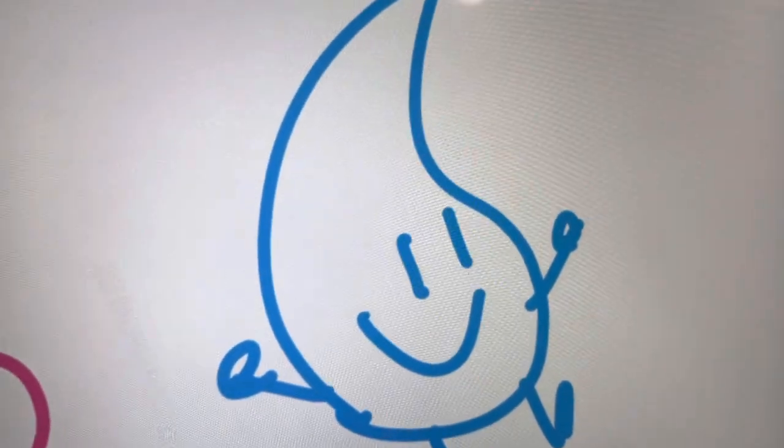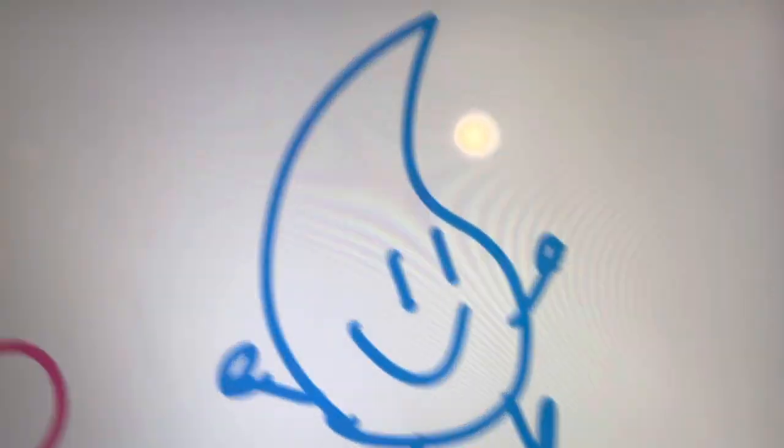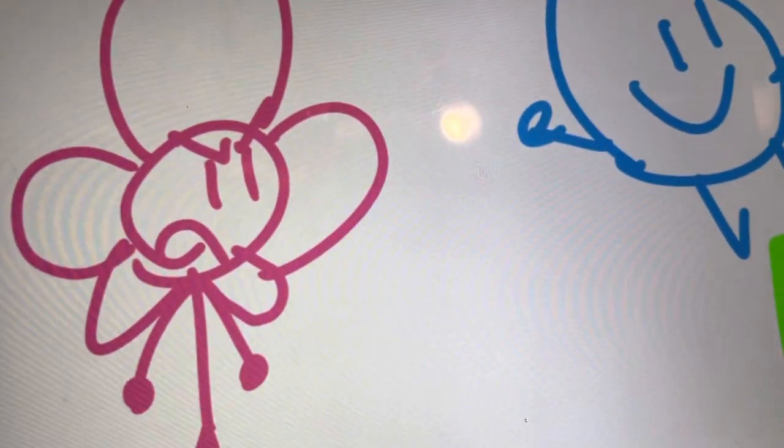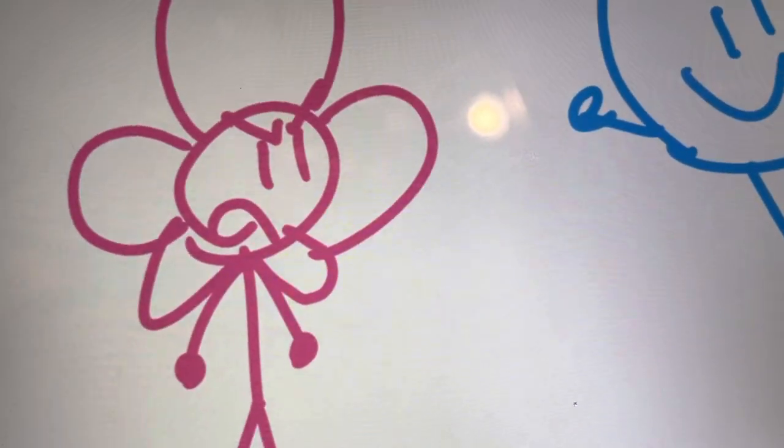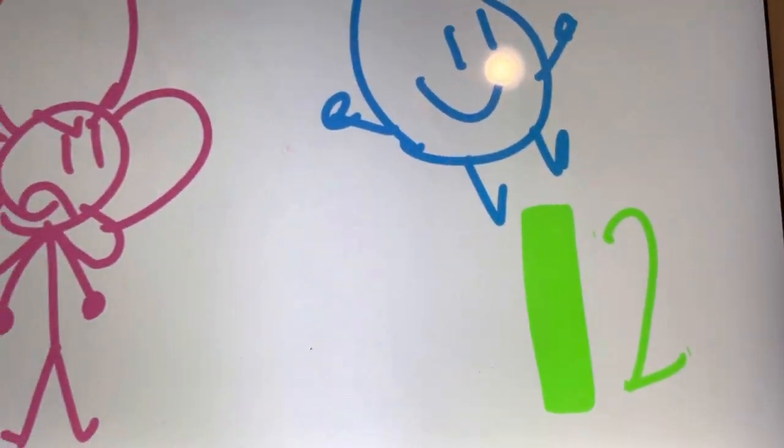Teardrop made a soggy, wet cake, so I made them lose one point. But Flower made a vanilla icing cake, so I gave them back a point.